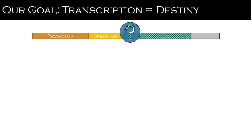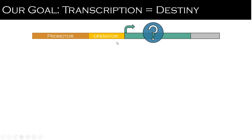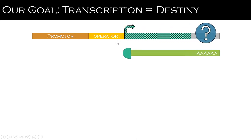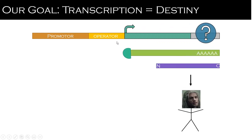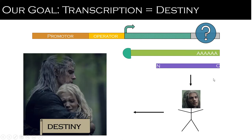So let's first talk about our overall goal. Transcription in this scenario is equal to Geralt finding his destiny. We want to understand what activators or repressors are present to allow RNA polymerase to transcribe this gene and then for it to be translated into Geralt finding his destiny.